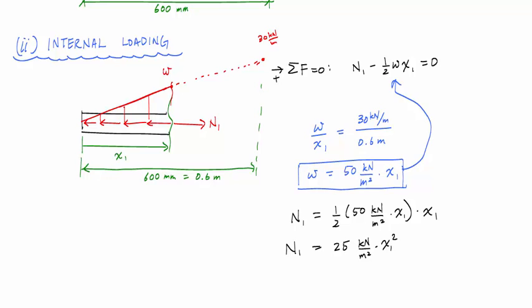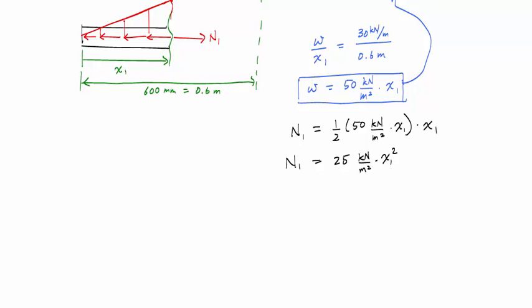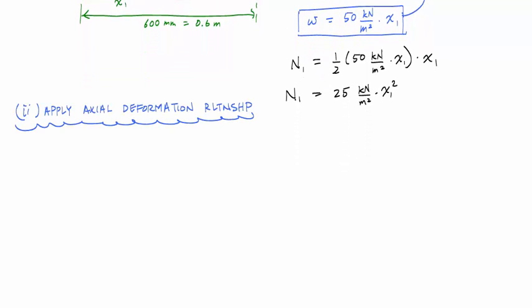Really, if you've done this, you're halfway there. Now what we're left with is substituting into our deformation axial deformation relationship and integrating. Since there's only one segment to look at, what we're trying to do is calculate the deformation of A with respect to the fixed end, or with respect to B. B is not going anywhere because it's fixed, so the deformation of A with respect to B will just give me the deformation of A itself.